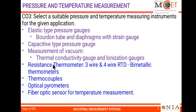The temperature measurement portion covers RTDs and thermocouples, which are mostly used in industries. Under RTD resistance thermometers, bimetallic thermometers are also discussed. For high temperature measurement, thermocouples are suitable — different types of thermocouples, their characteristics, and how they are implemented in industries along with thermowells are included. For non-contact type temperature measurement, optical pyrometers and fiber optic sensors are covered.